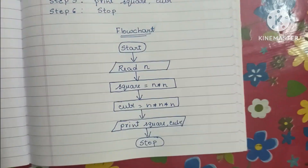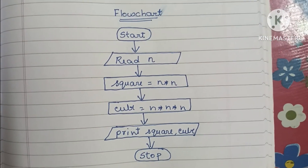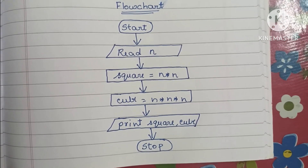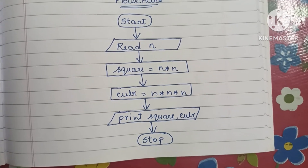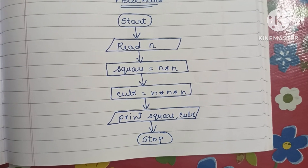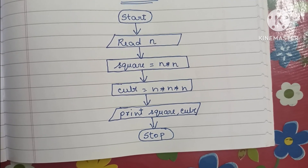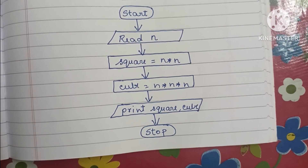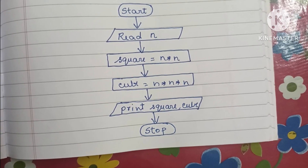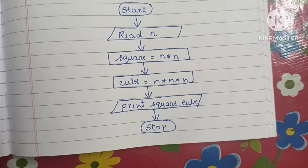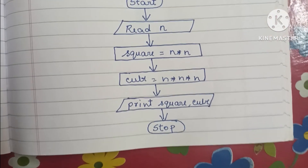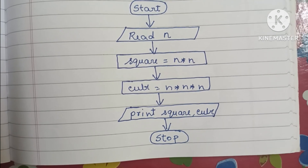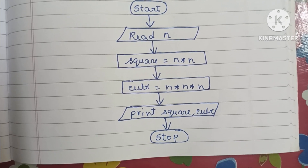So this is the flowchart to find square and cube of a number. The flowchart starts with a start statement written within an oval shape. Input values are written within a parallelogram shape — read N. Calculation is done within a rectangle shape: square = N × N, and cube = N × N × N, multiplying a number three times. Output values are printed within a parallelogram shape — print square, cube. Finally, stop the flowchart using the stop statement.